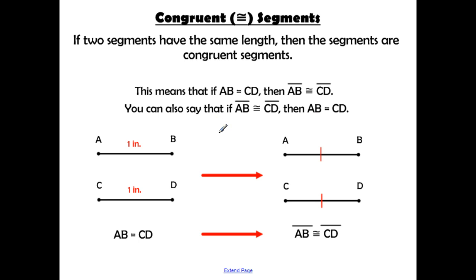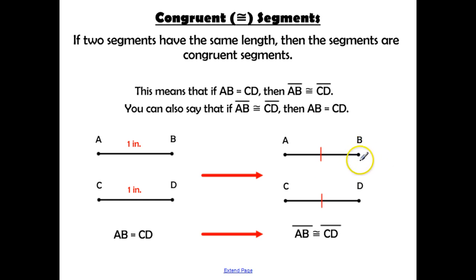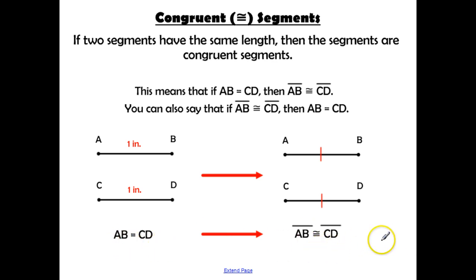There's a difference in how we talk about segments. If segment AB measures one inch and segment CD measures one inch, we say the length of AB equals the length of CD. If they each have one tick mark, those marks tell us the segments are the same length — we don't know the exact measurement — so we say segment AB is congruent to segment CD.